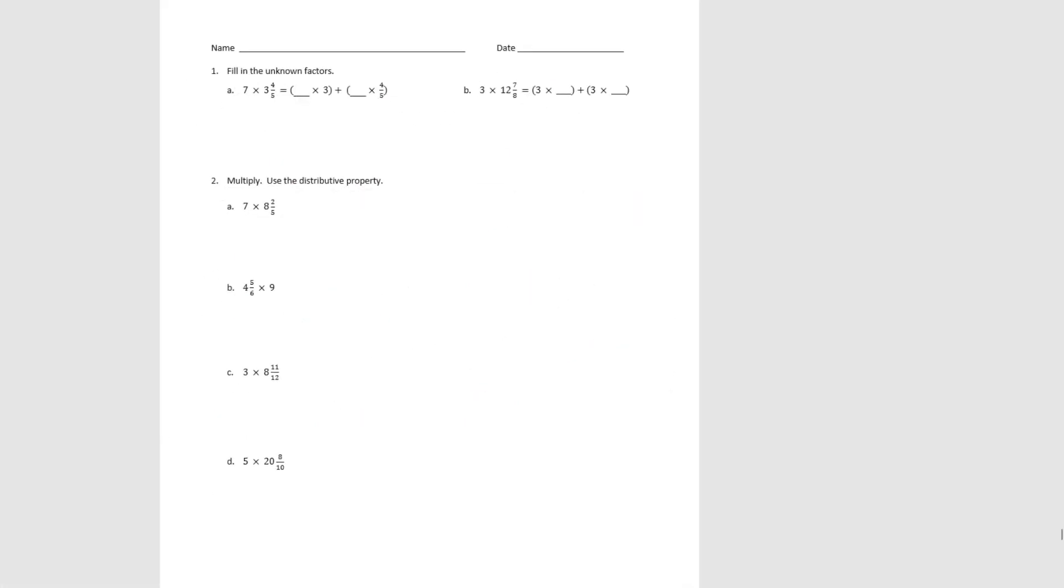For number 1, it says fill in the unknown factors. So it's distributed over our whole number and our fraction. We would have 7 times 3 and 7 times 4 fifths. When we do the multiplication, we'd have 21 plus 28 fifths. We would decompose 28 fifths into 5 and 3 fifths. Then when we add, we'd get 26 and 3 fifths.